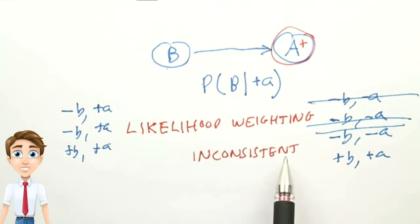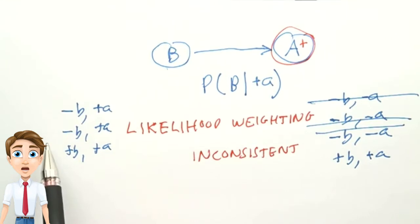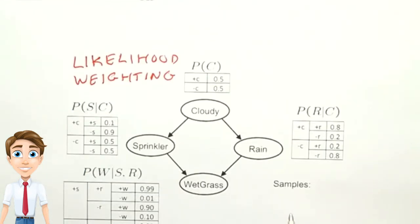We can fix that, however, by assigning a probability to each sample and weighing them correctly. In likelihood weighting, we're going to be collecting samples just like before, but we're going to add a probabilistic weight to each sample.